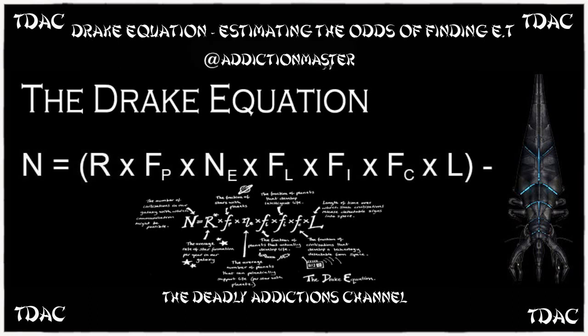The Drake Equation is used to estimate the number of communicating civilizations in our galaxy, or more simply put, the odds of finding intelligent life in the Milky Way. First proposed by radio astronomer Frank Drake in 1961, the equation calculates the number of communicating civilizations by multiplying several variables.